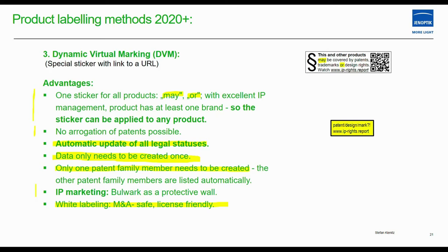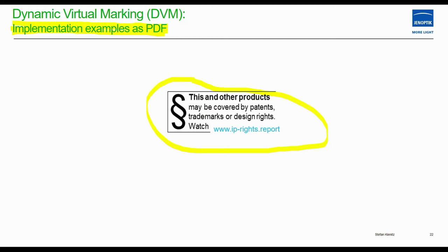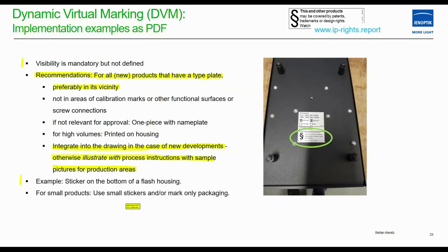You can see the sticker for Gin Optic and an example of the implementation as a PDF. This shows how the sticker is placed — visibility is mandatory but not precisely defined. Recommendations are: for all new products that have a type plate, place the sticker preferably in its vicinity, directly next to the type plate, and integrate it into drawings during new development.